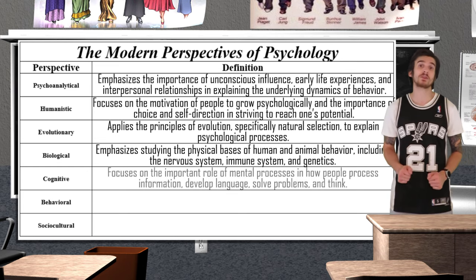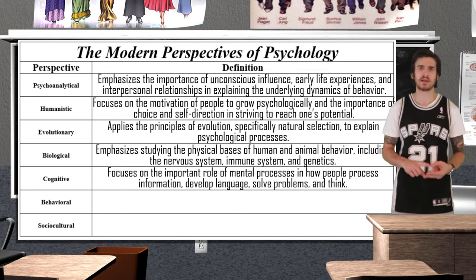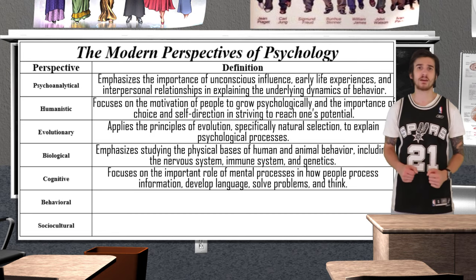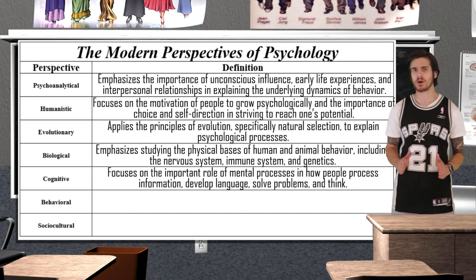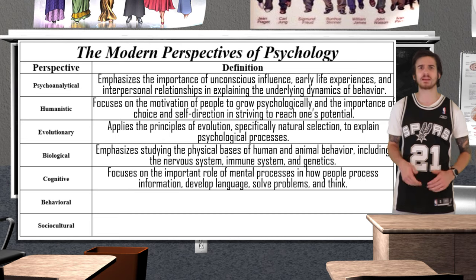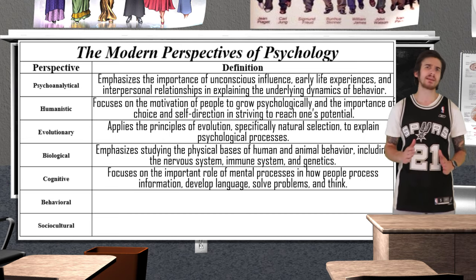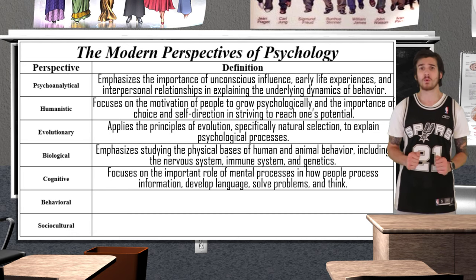The cognitive perspective of psychology is going to focus on our mental processes — things such as memory, perception, language, problem solving, and thinking. A cognitive psychologist believes that maladaptive behaviors are a result of an irrational thought process. For example, imagine Linda is afraid of clowns and experiences panic whenever she sees one. A cognitive psychologist may attempt to find what the activating cause of this fear is in order to change this maladaptive behavior.